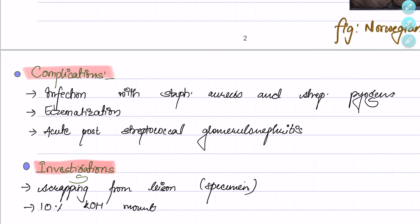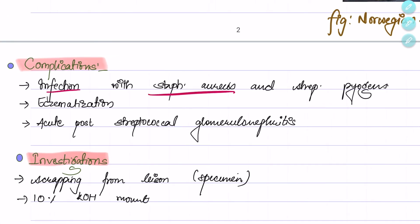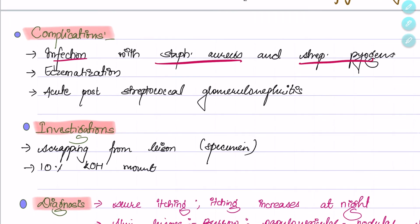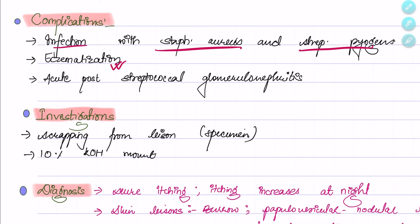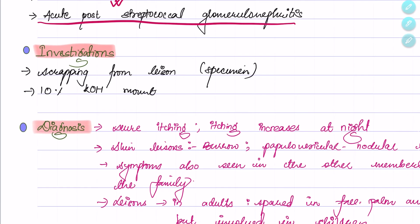The complications of scabies include secondary infection with Staphylococcus aureus or Streptococcus pyogenes, eczematization of the lesions, or acute post-streptococcal glomerulonephritis. The investigation is 10% KOH mount, and the specimen is taken by scraping from the lesions.